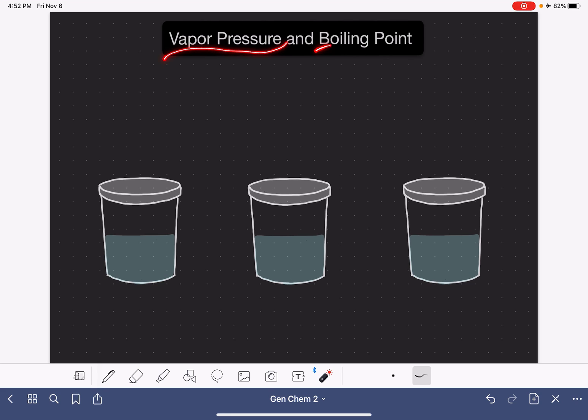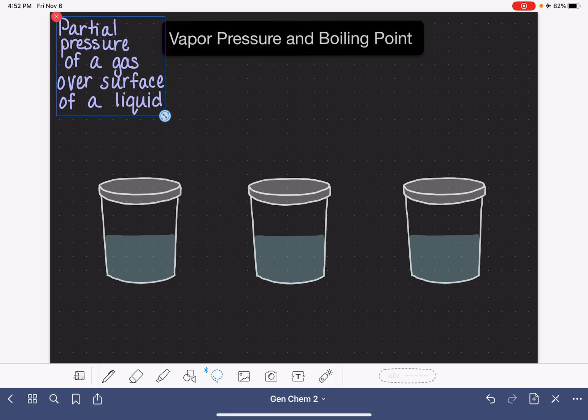This video is going to go over vapor pressure and boiling point. Let's start by defining vapor pressure. Vapor pressure is the partial pressure of a gas over the surface of a liquid.